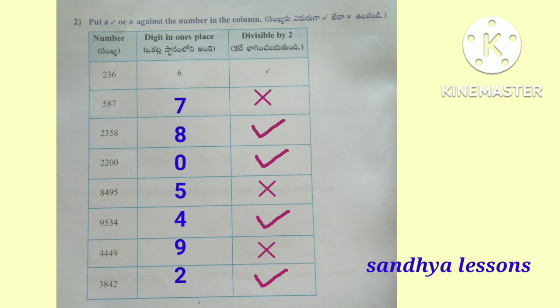587 — digit in ones place is 7, so it is not divisible by 2. 2,358 — digit in ones place is 8, so it is divisible by 2. 2,200 — digit in ones place is 0, so it is divisible by 2. 8,495 — digit in ones place is 5, so it is not divisible by 2. 9,534 — digit in ones place is 4, so it is divisible by 2.